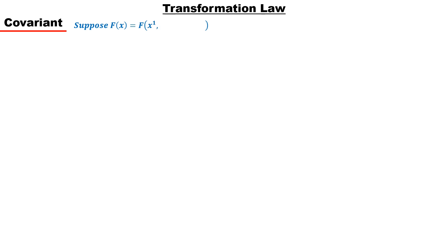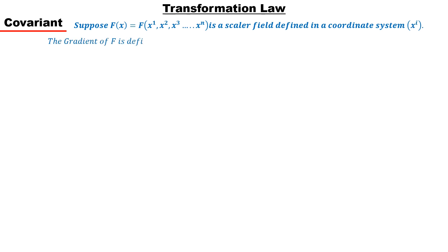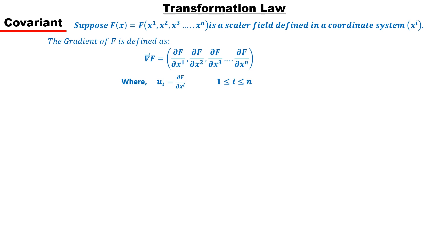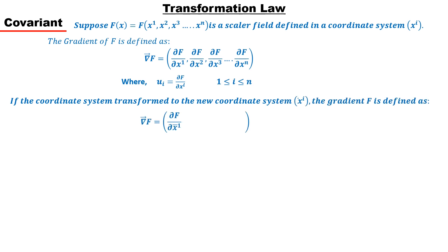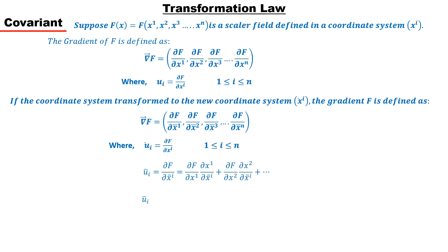Now let's talk about the general transformation law of contravariant and covariant tensors. Suppose a function f defines the scalar field in the x-super-i coordinate. The gradient of this scalar field is defined such that each component has a component of gradient, defined with u-sub-i. Here index i is written in the subscript because the gradient is a covariant tensor, in which indices are written in the subscript of components. If the coordinate transforms to a new system x-bar-super-i, the gradient can be defined in this coordinate as u-bar-sub-i. Expanding u-bar-sub-i through the chain rule and using Einstein summation convention, it simplifies accordingly.